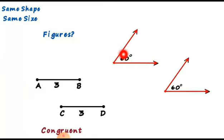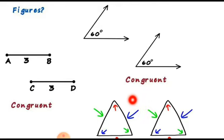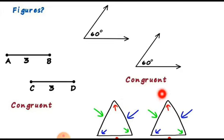Now check the angles — both angles are 60°, so they have the same shape and the same size. These angles are also concurrent angles. Now check the triangles. How can we check whether two triangles are concurrent or not? Check all these sides: they are equal, and all these angles are equal.